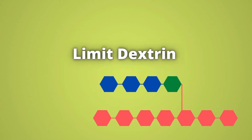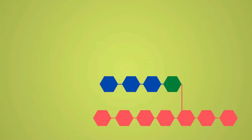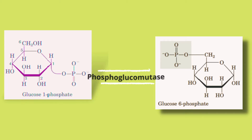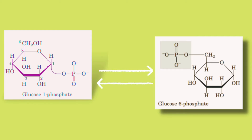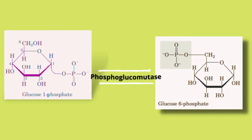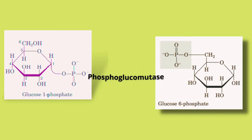The glucose-1-phosphate molecules will enter glycolysis, or in the liver will be converted into glucose-6-phosphate by the enzyme phosphoglucomutase. This reversible interconversion of glucose-1-phosphate into glucose-6-phosphate and vice versa forms an intermediate compound called glucose-1,6-bisphosphate, which I have already explained in detail in the video about glycogenesis — I'll link that video at the end.